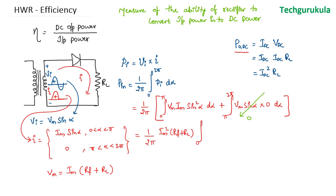And now the integration zero to π sin square α dα. So this can be written equal to R_f plus R_L times 1 over 2π integral zero to π I_m square sin square α dα. So this term is nothing but I_RMS square. So we have the P_IN is equal to I_RMS square times R_f plus R_L.